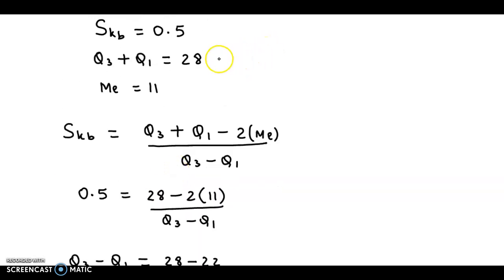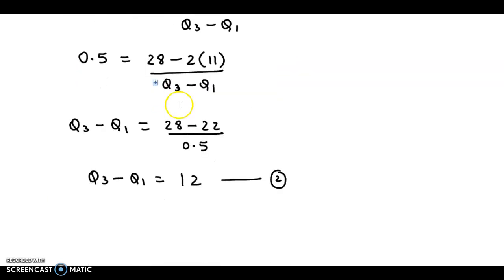So we can call this equation number 2, and the previous one equation number 1. Now if we solve the two equations, 1 and 2, we will get the upper and lower quartiles.